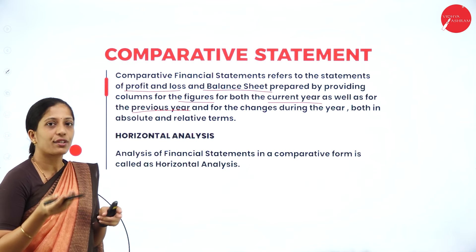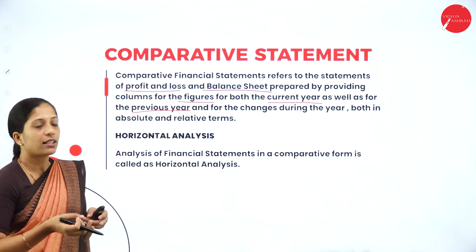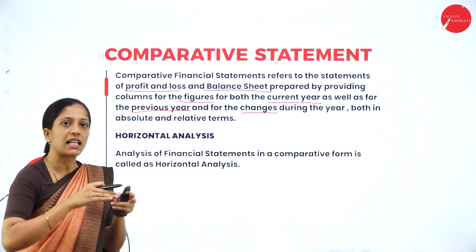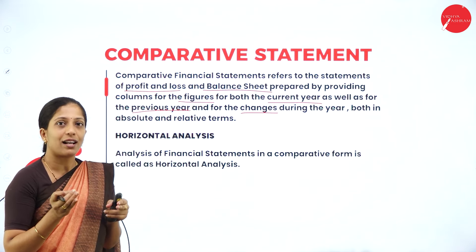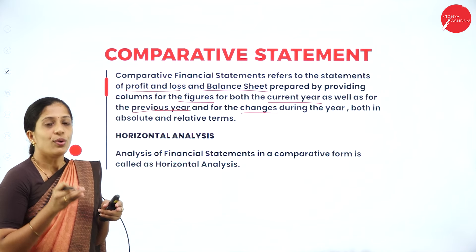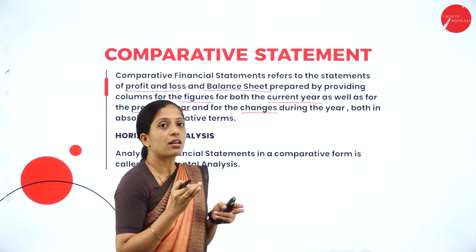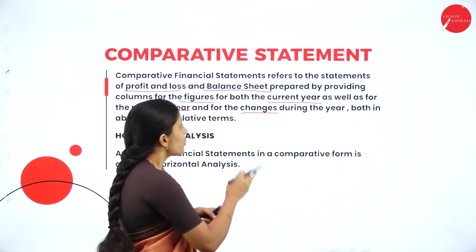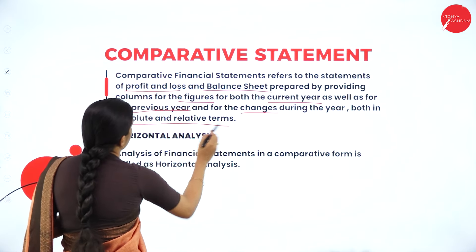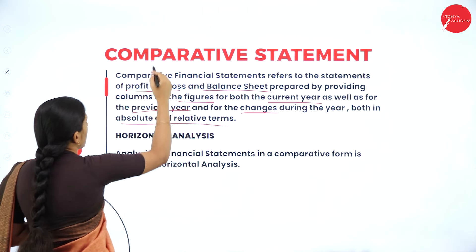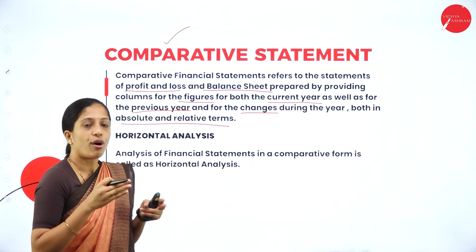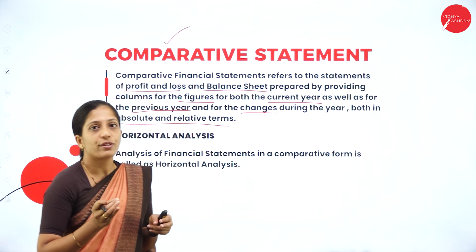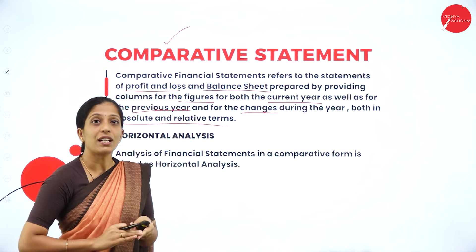Under comparative statement, you are going to record the data of the current year as well as the previous year by providing the required columns and showing the changes during the year — whether it has increased or decreased. That comparison will be done when you have financial data of two years. You are going to compare each and every financial data with that of the previous year or the current year, both in absolute as well as relative terms. Comparative statement means you take the data of two financial years and compare whether it has increased or decreased, in both absolute and relative terms.